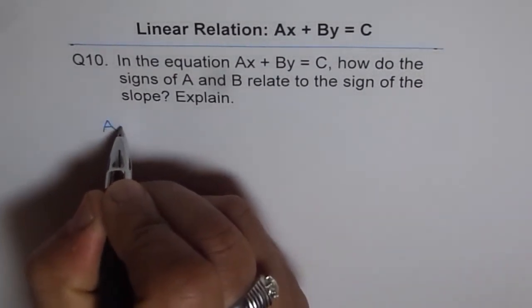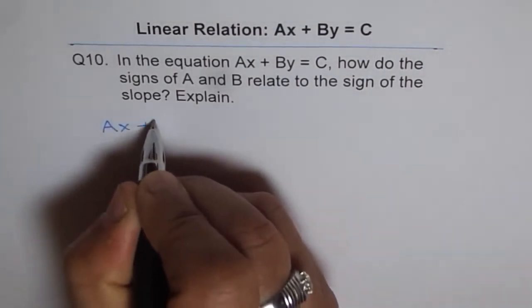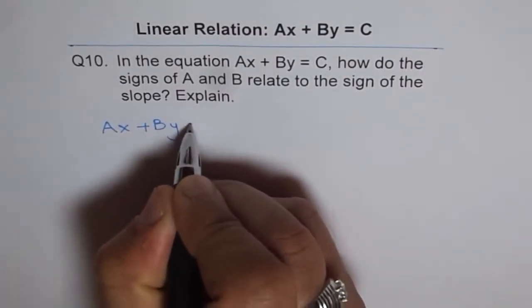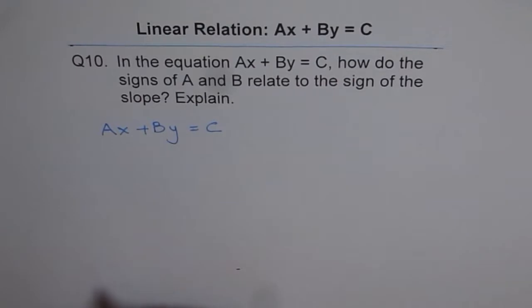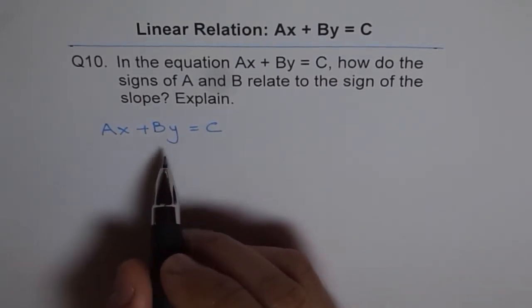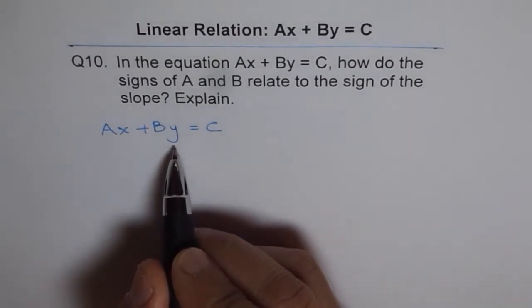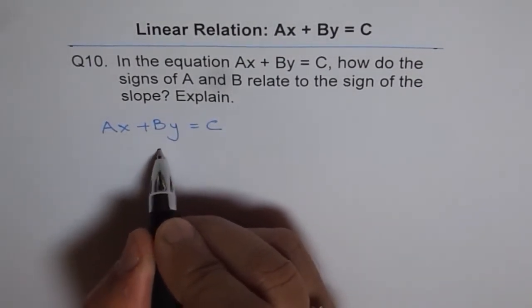We have AX plus BY equals to C. That is the given equation. From here, we will start and write it in the form of slope and intercept. That basically means rewriting as what Y is equal to, rather isolating Y.